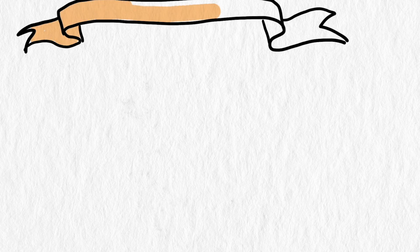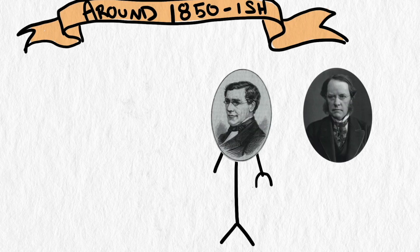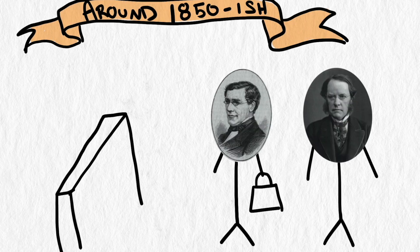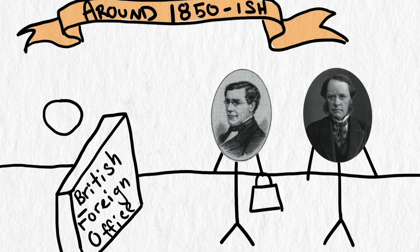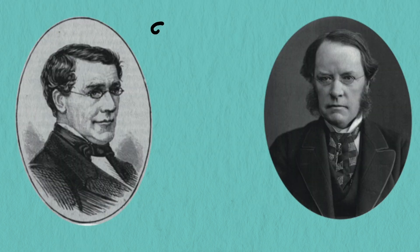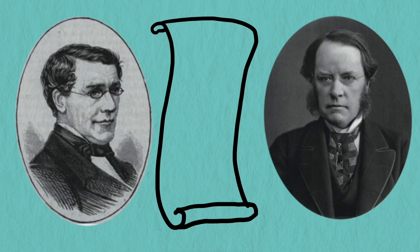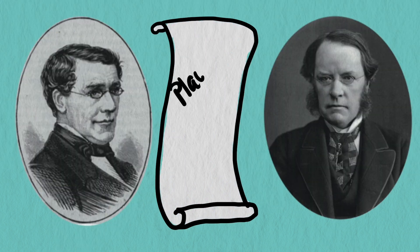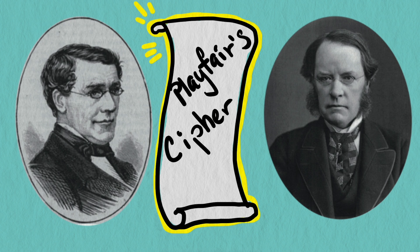Sometime around 1850, Sir Charles Wheatstone and Lord Lyon Playfair brought a proposal for a new type of secret encrypting method for protecting telegraphed messages to the British Foreign Office. This method, now commonly known as Playfair Cipher, was groundbreaking work in the progression of encryption methods.